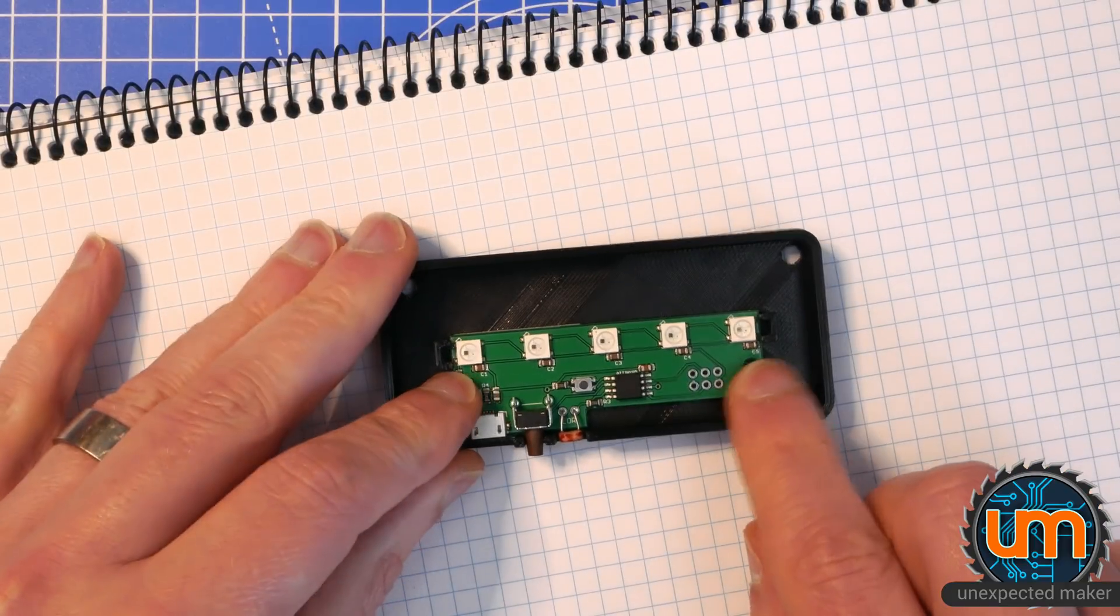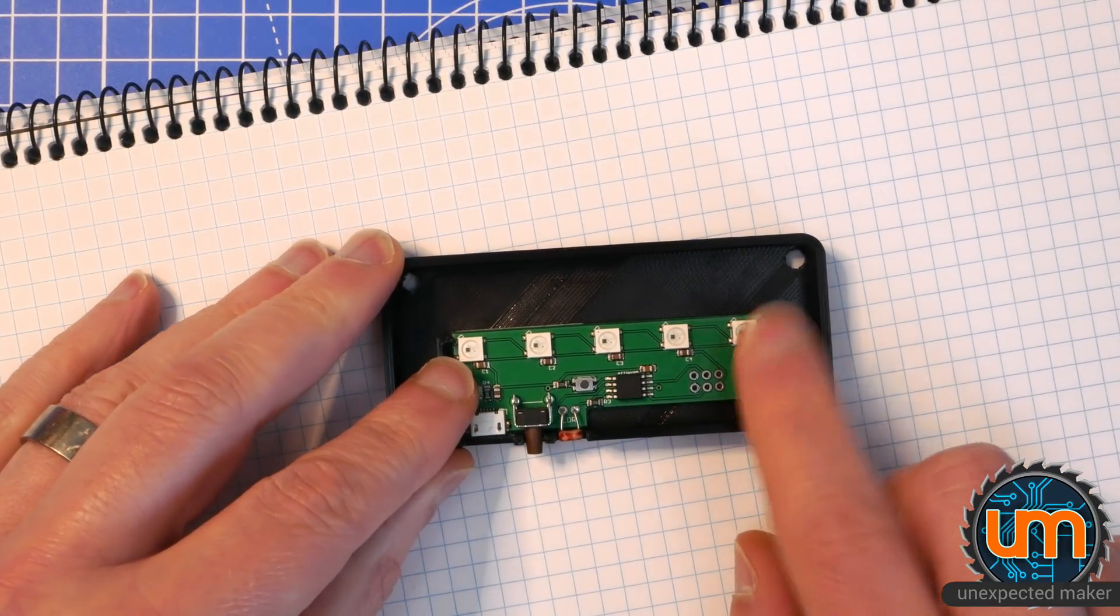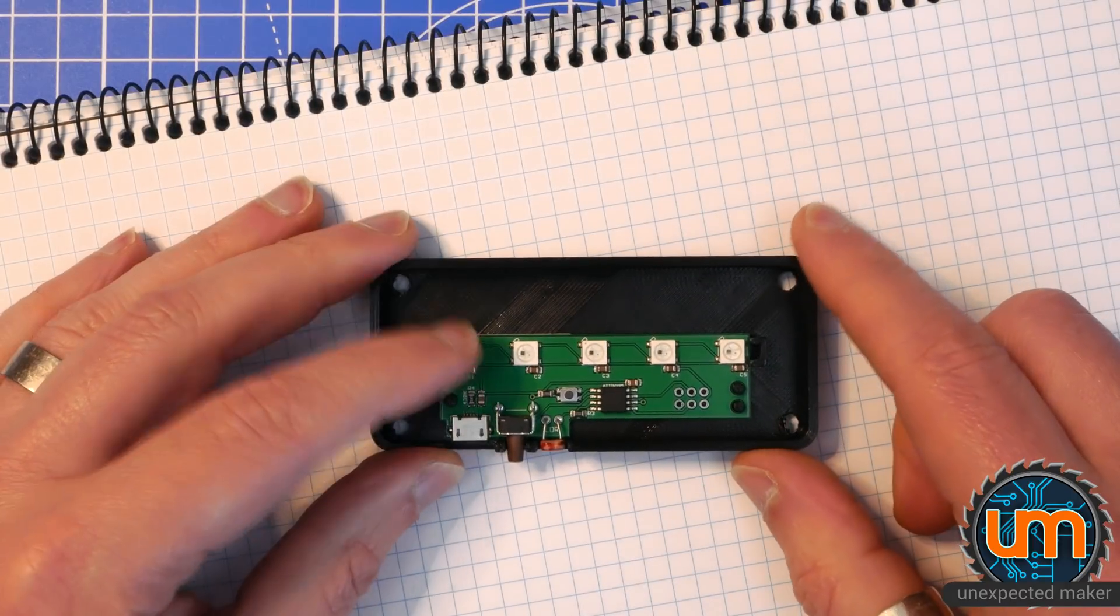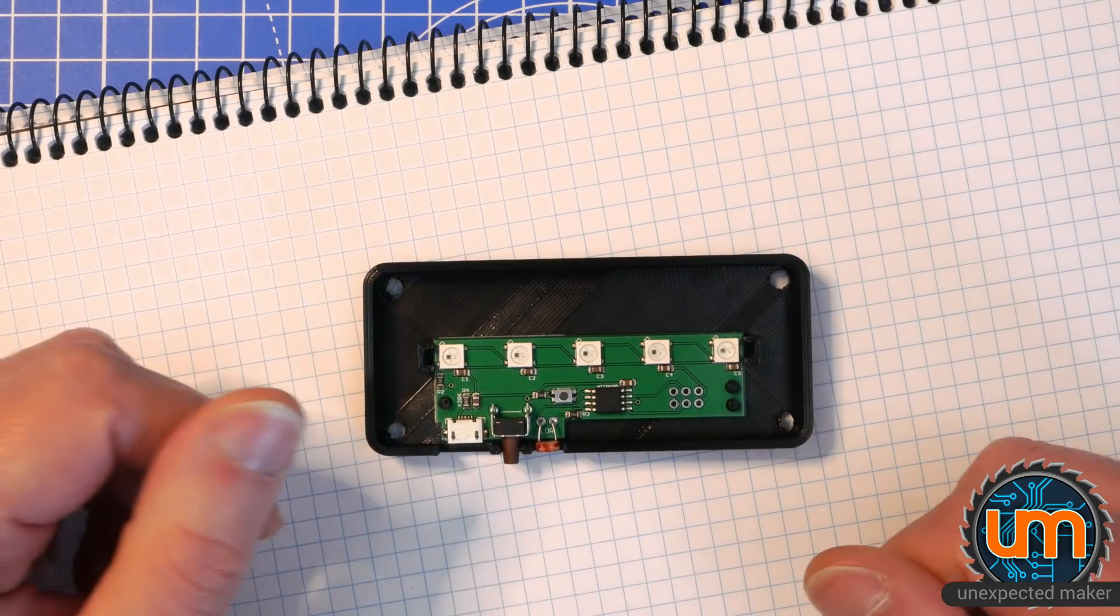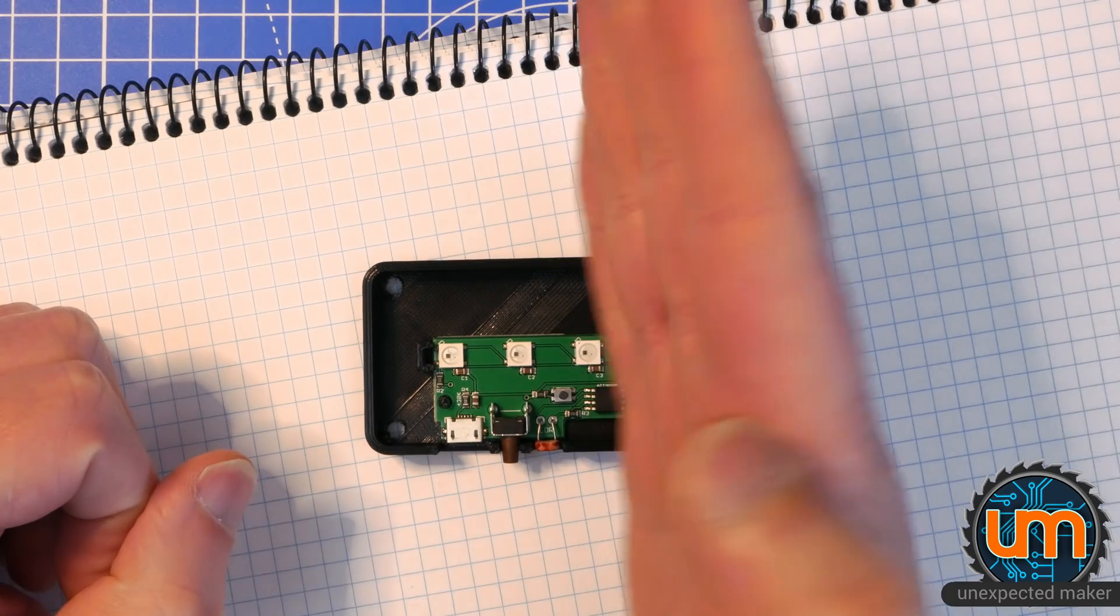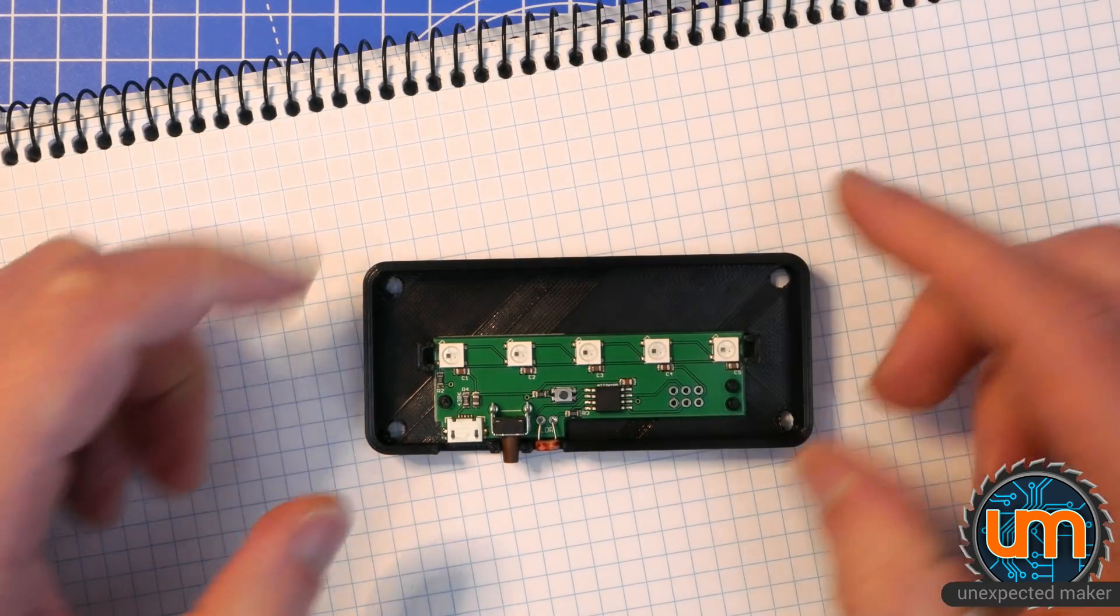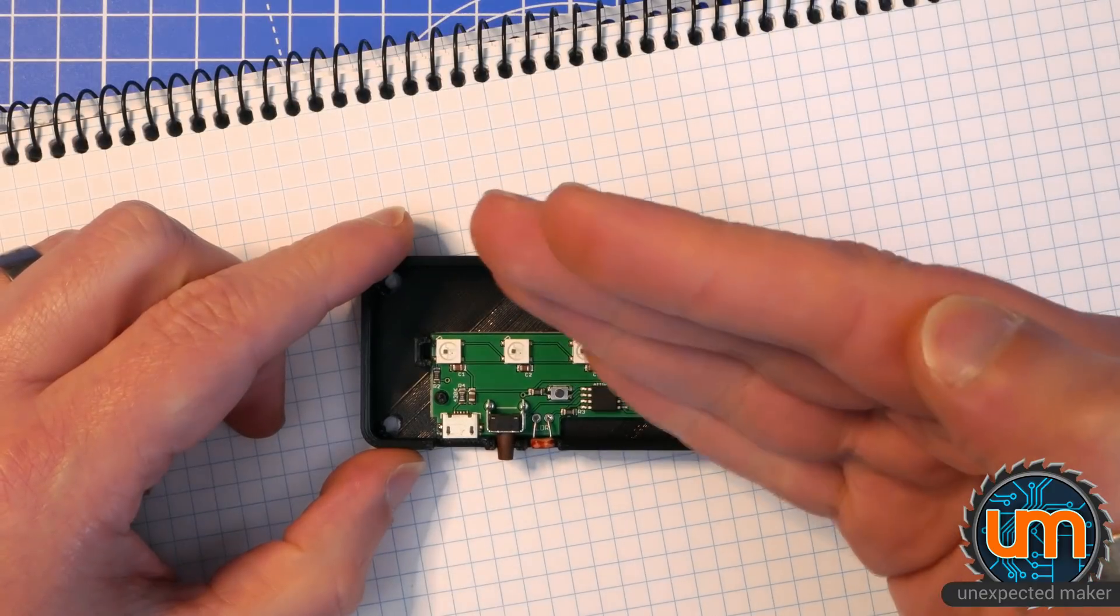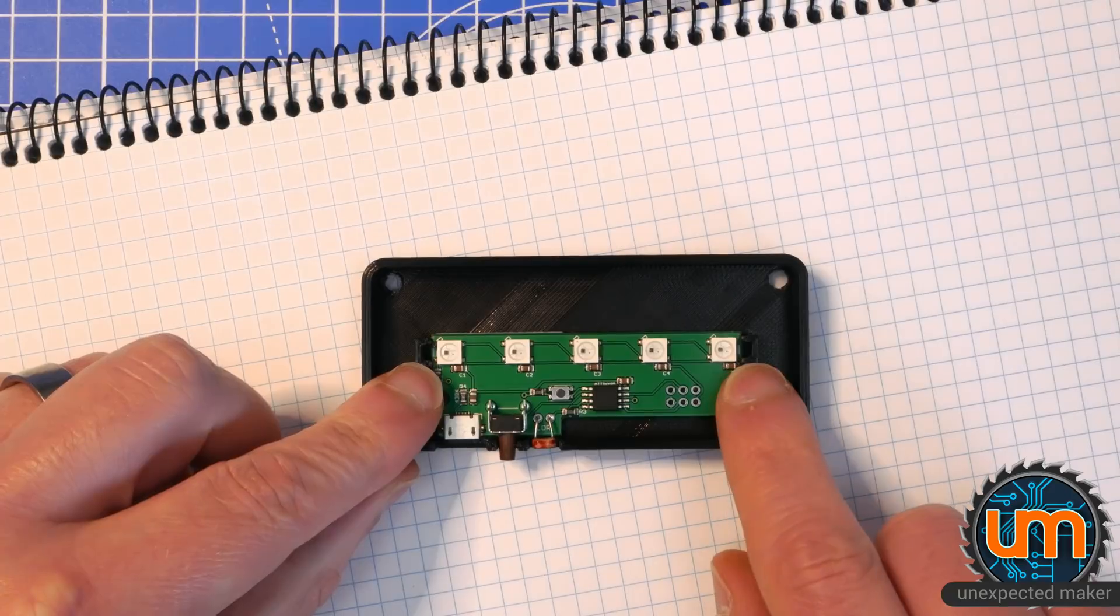I've also added some little side holders for the acrylic. One of the issues I had with my original base was the acrylic could actually tilt back and forwards. Getting it perfectly straight sometimes was a bit hard. I wanted to make sure that it was held still, so I put some little holders on the sides here.